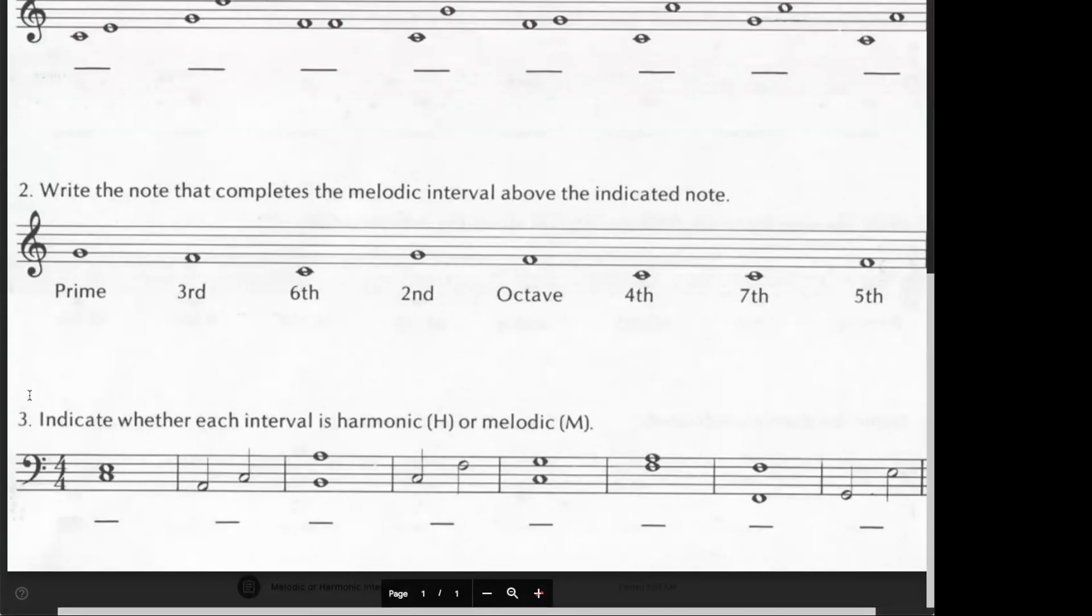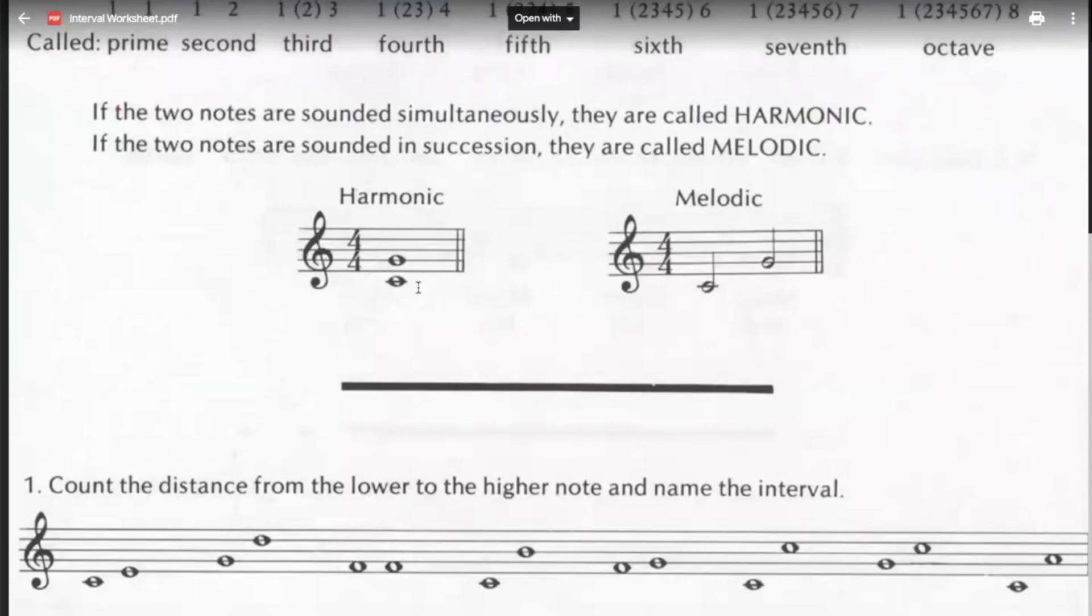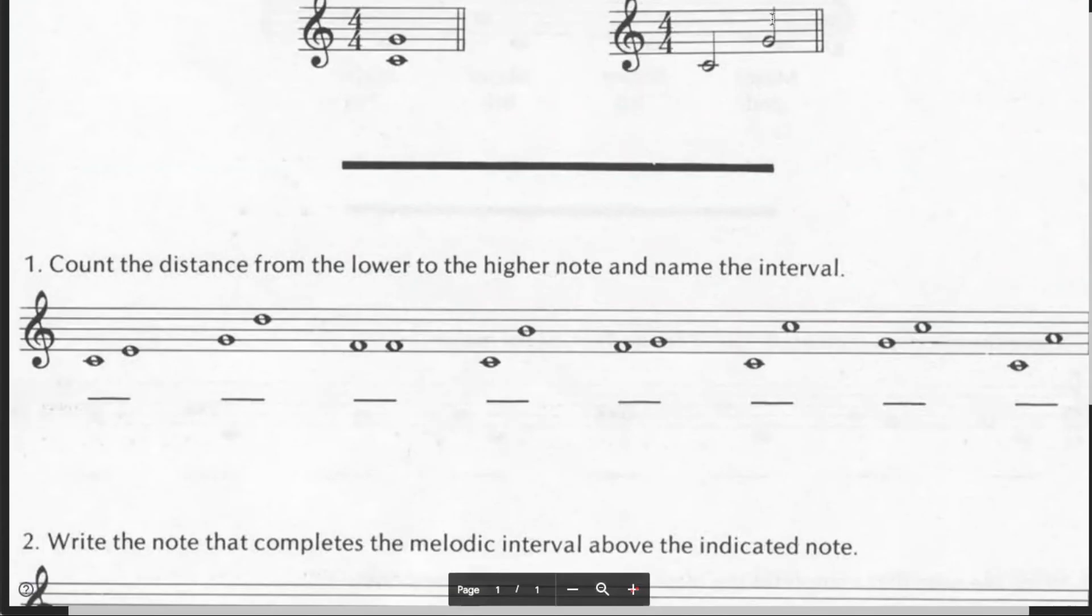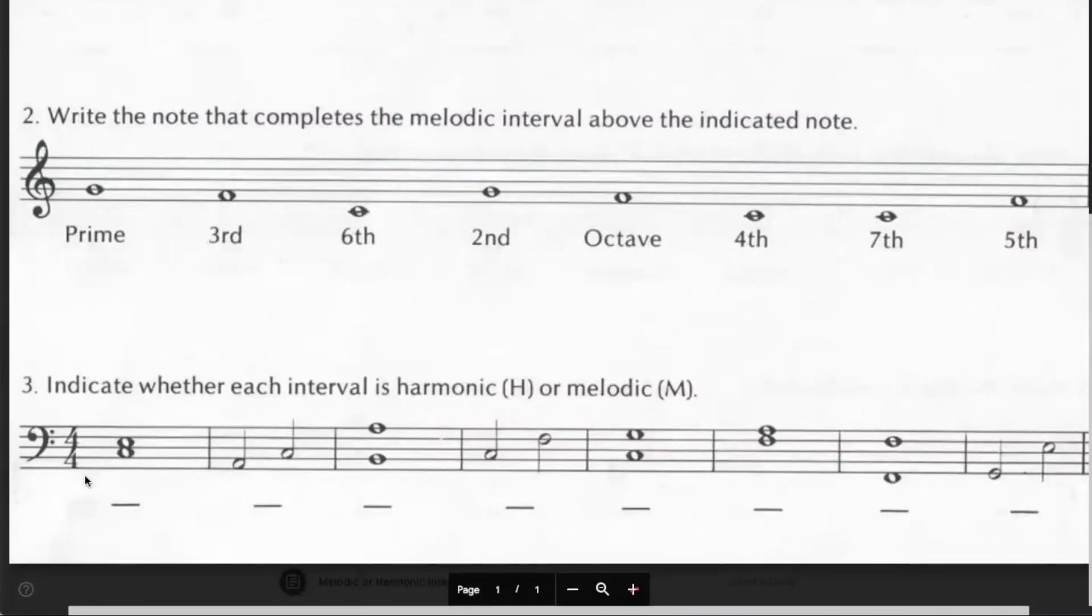All right. Question number three, indicate whether each interval is harmonic or melodic. Harmonic, they have stacking notes. Melodic, they're separated. Okay. So the first one, they're stacked notes. They're two space notes. We should know that that is a harmonic interval. So we would put an H here. Now we have two notes here, but they're not stacked. They're separated. First space, second space, separated notes. M for melodic. Okay. And you should be able to finish the remaining intervals.